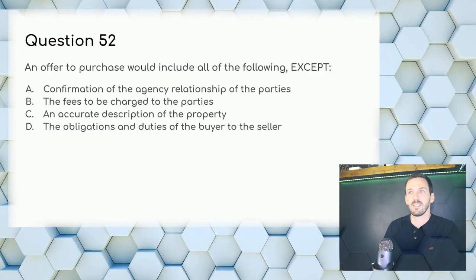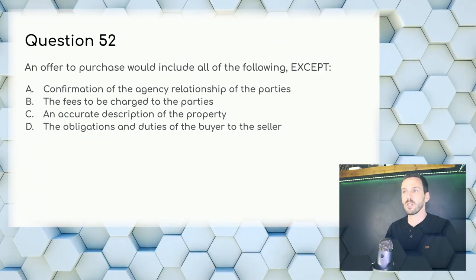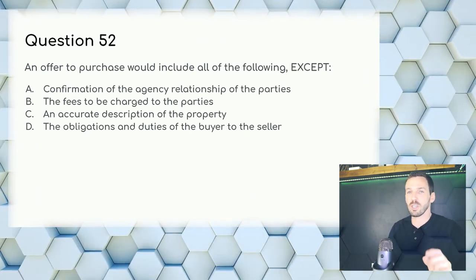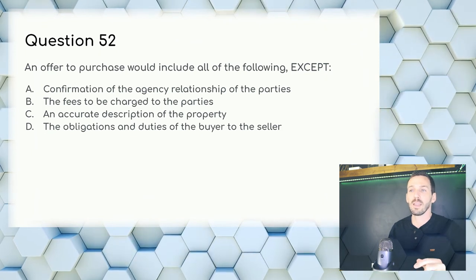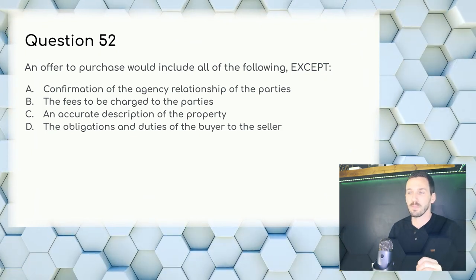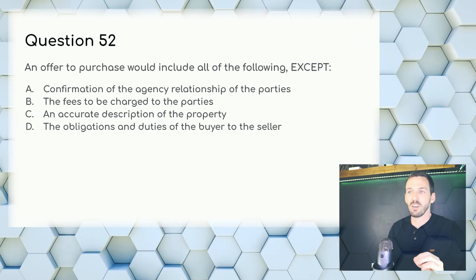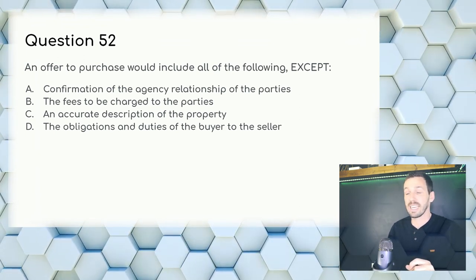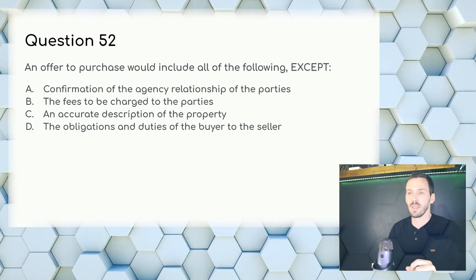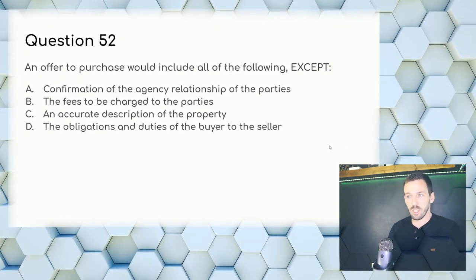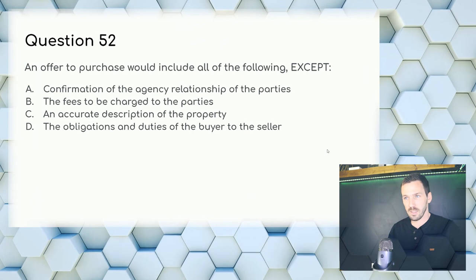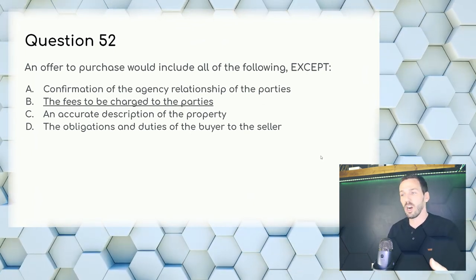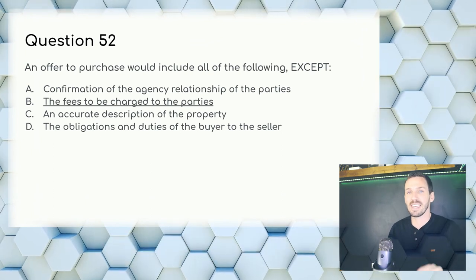Question 52: An offer to purchase would include all of the following except — you need the agency relationship, the description, and the obligations. But fees to be charged are on a closing disclosure (CD), not in the offer to purchase. Answer: B, the fees to be charged of the parties.